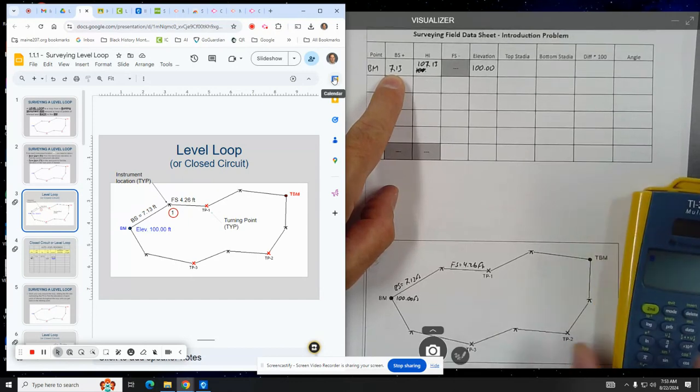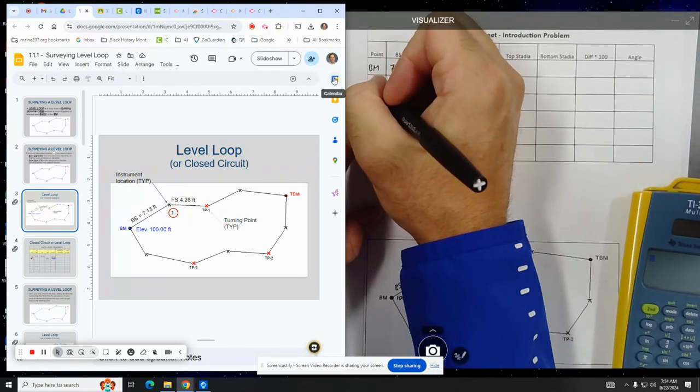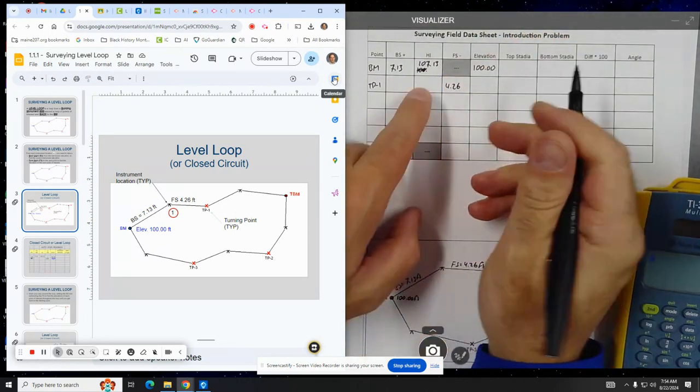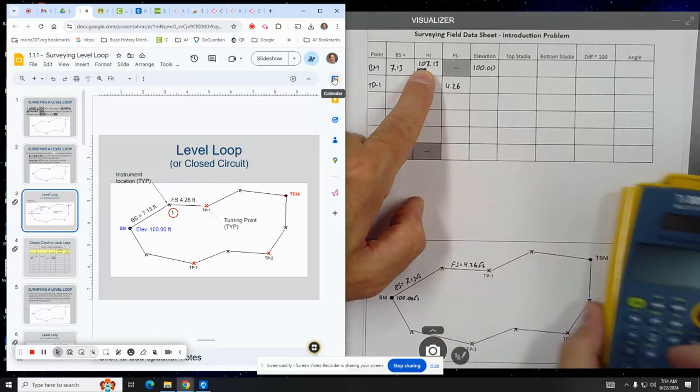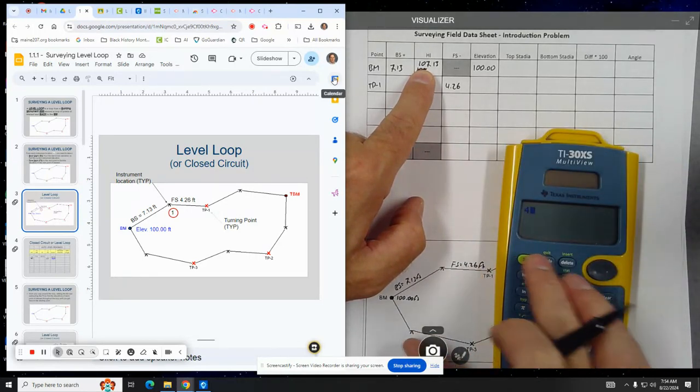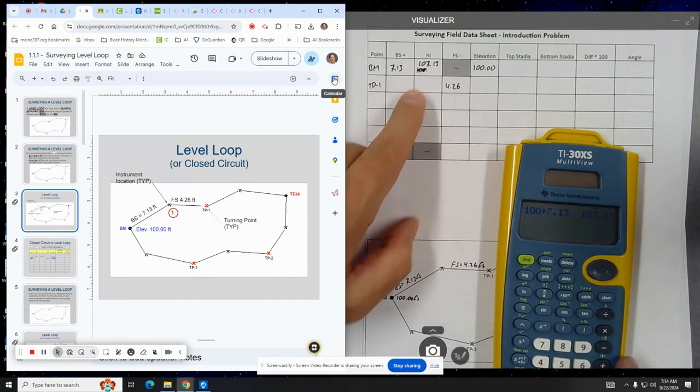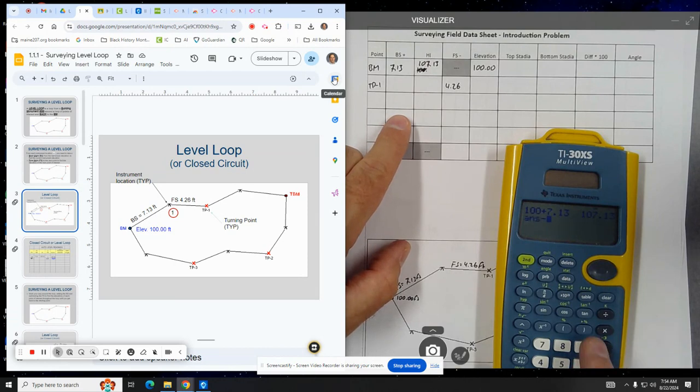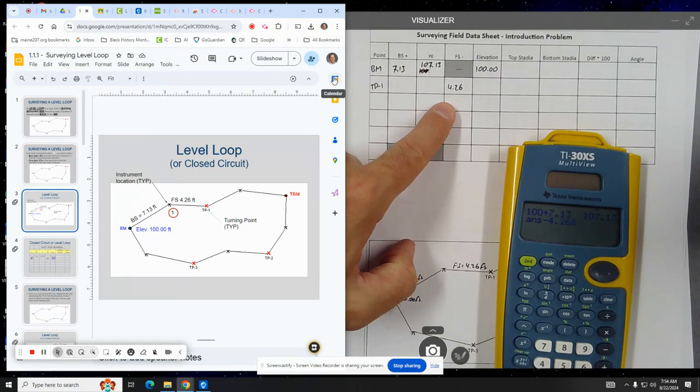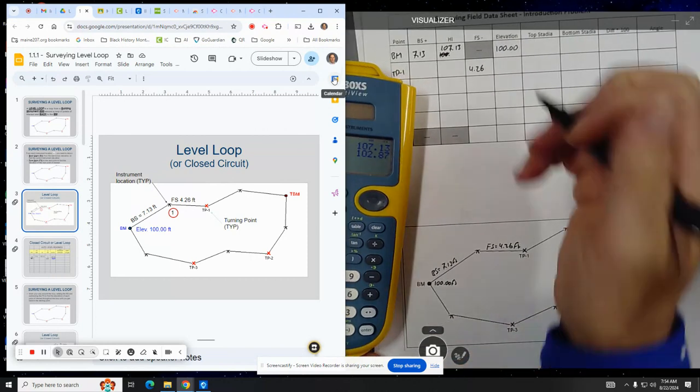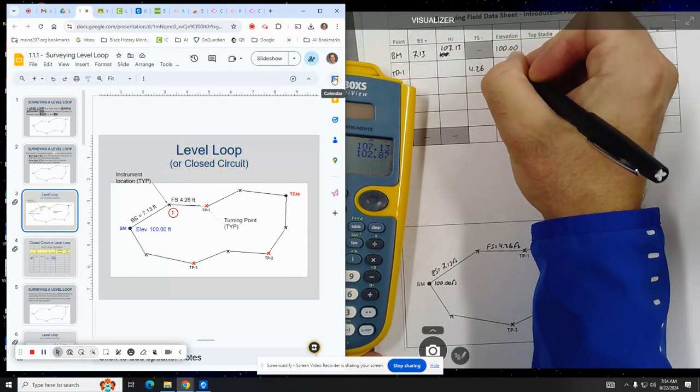And then my next point of interest is TP1, TP-1. And the foresight there is 4.26. So I take the height of the instrument and I subtract 4.26. So it's 100, I added 7.13. And then I take that and I subtract. And the easiest way in a calculator to do that is just hit the subtract button. That way I'll take the previous number and subtract 4.26. And so the elevation of this first point of interest, as the calculator says, is 102.87.